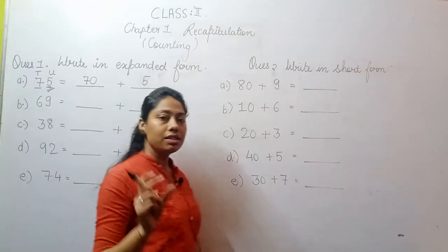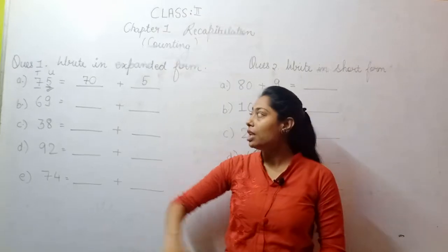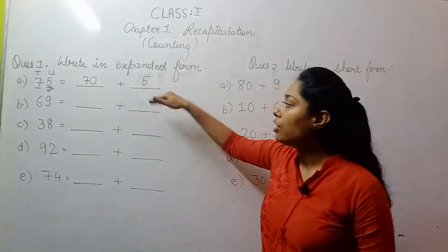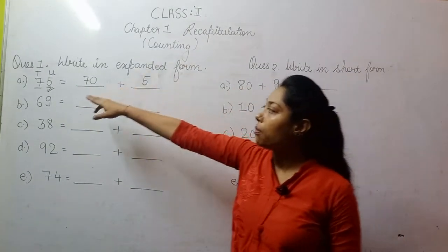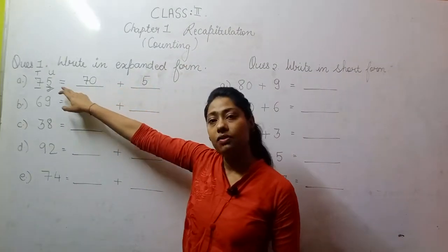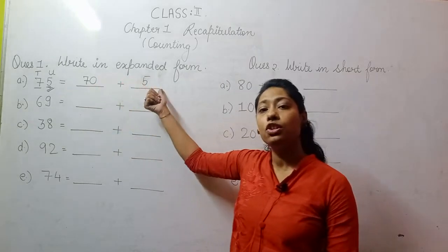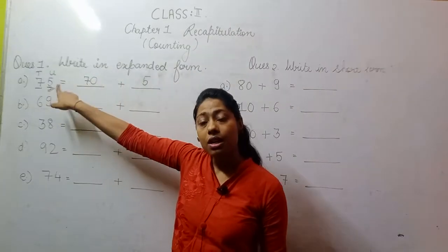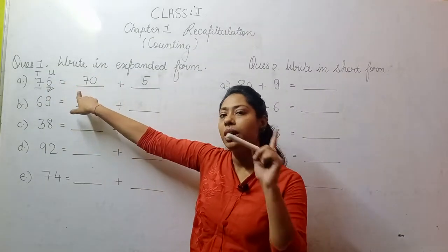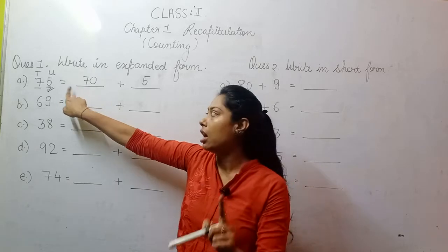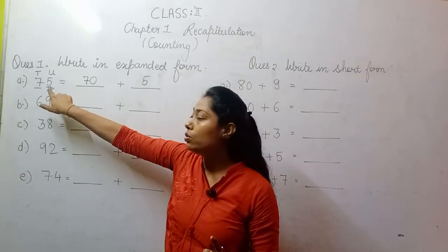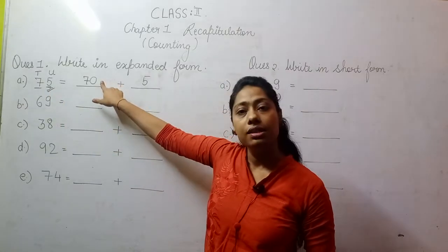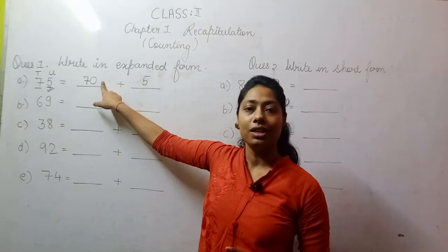You have to write whatever place values you have. I have written 5, but after 5 there was no number, so I have not added a zero after it. Similarly, I have written 7, but after 7 there was 1 digit, so I have added a 0 to make it 70. So 75 in expanded form is 70 plus 5.